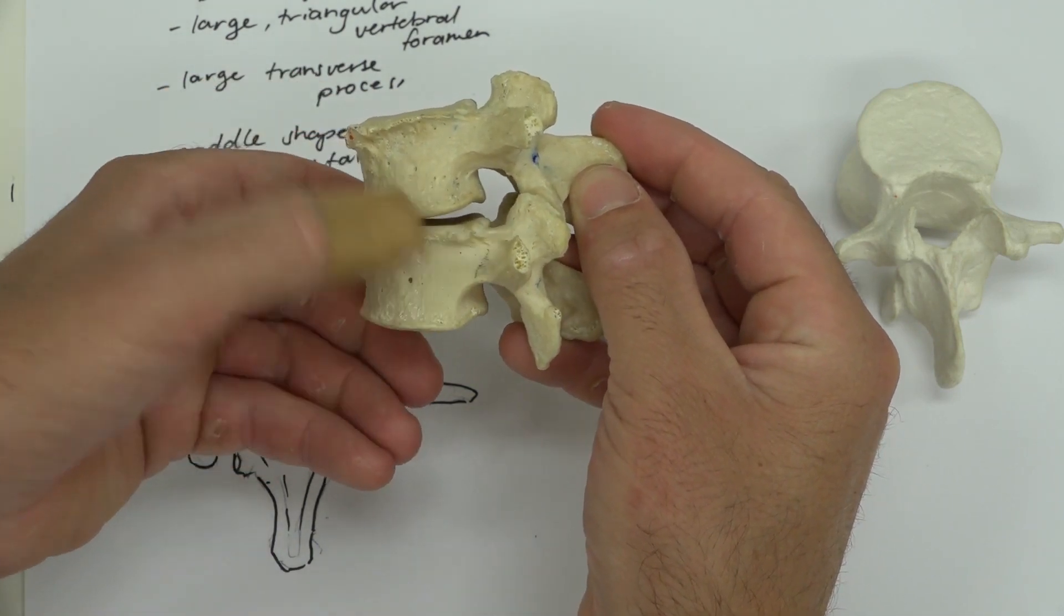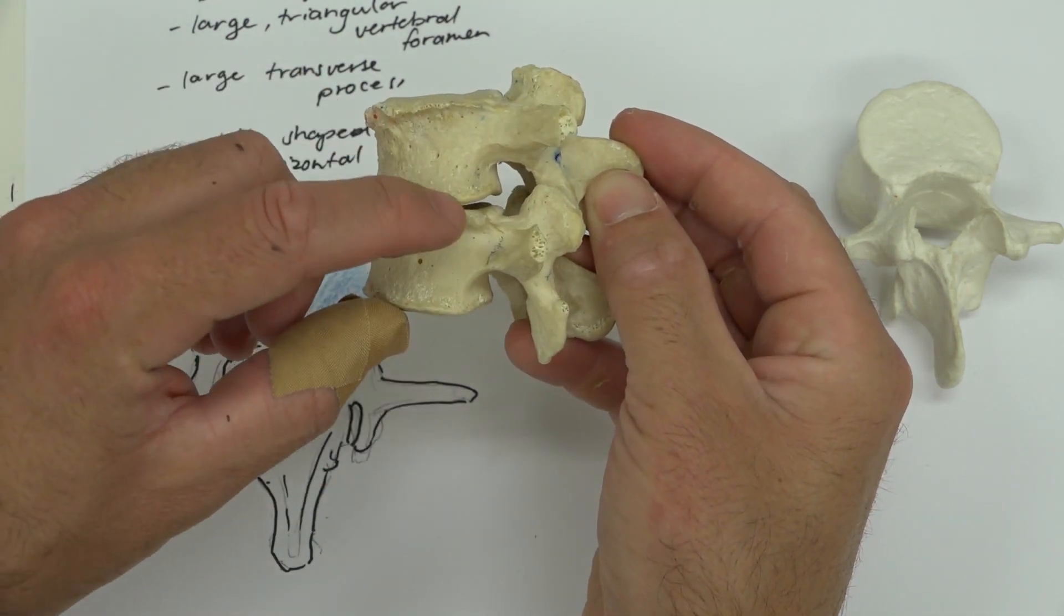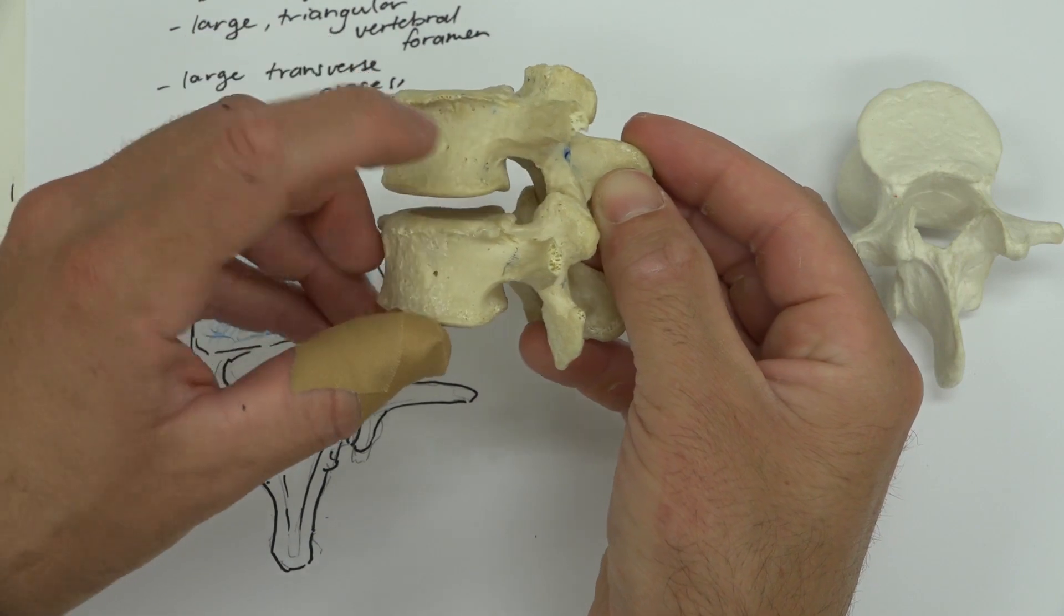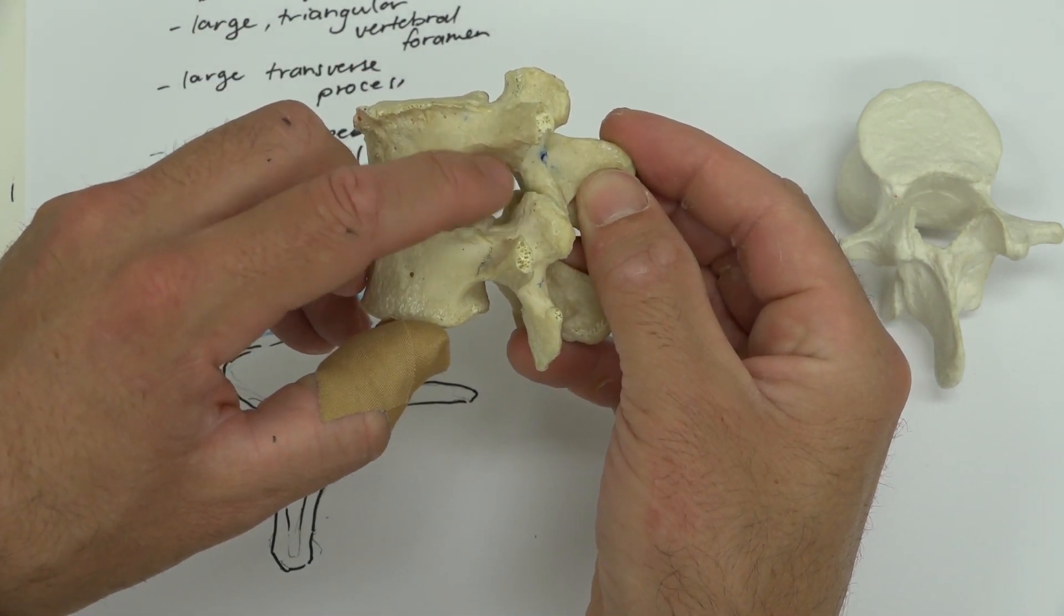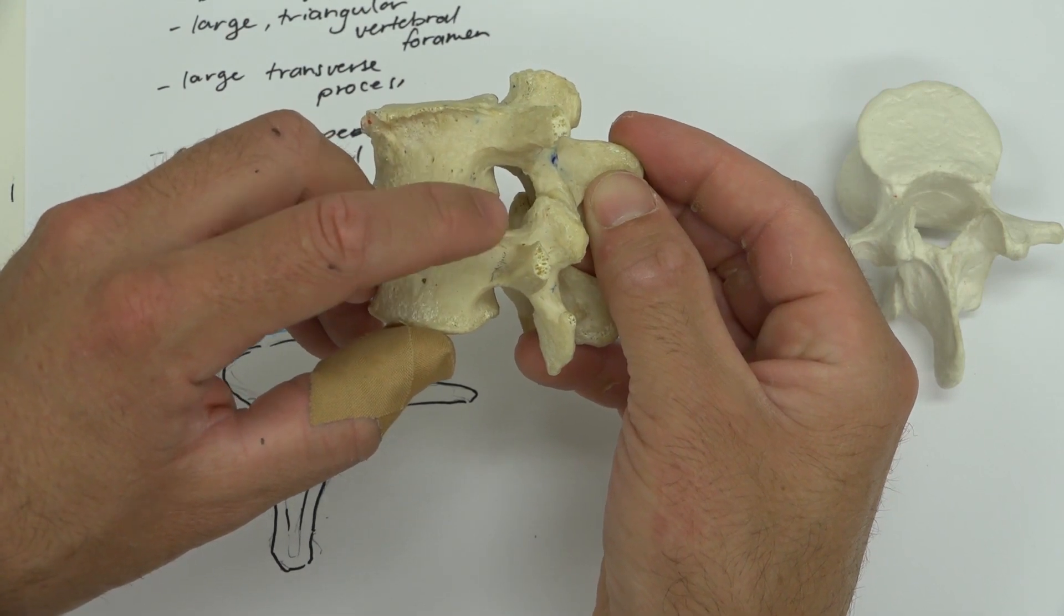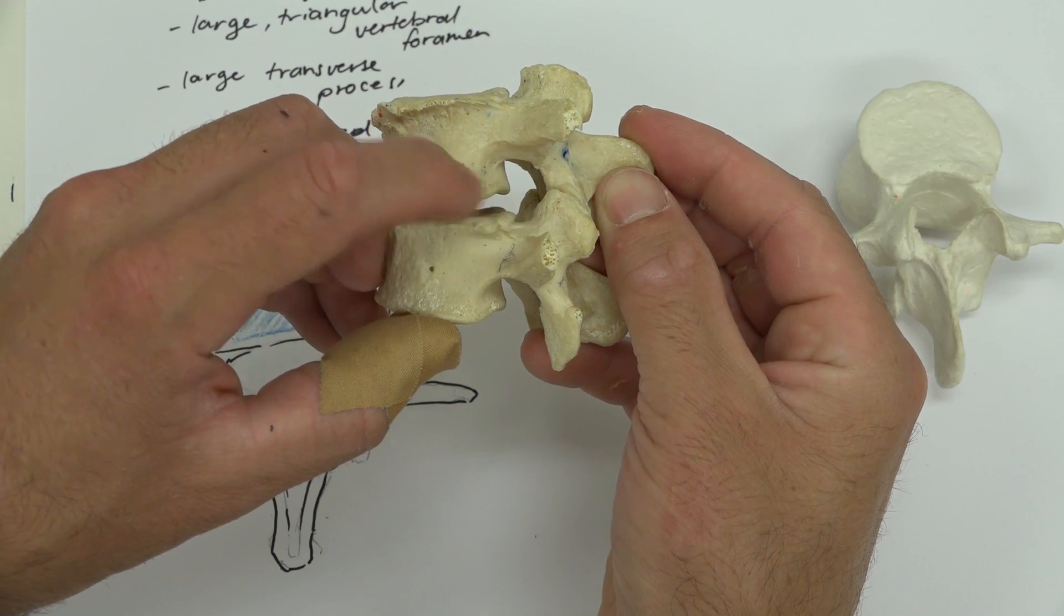And that would push the intervertebral disc backwards, which then would force all of the contents out the back. And here, this space is called the intervertebral foramen, where the nerves emerge. Now, we've talked about nerves before, L1, L2, L3, L4, etc. So your lumbar nerves would emerge in this space here, the intervertebral foramen.